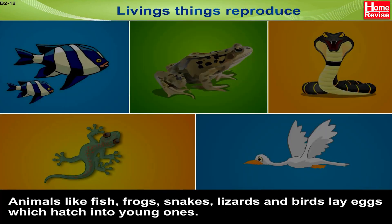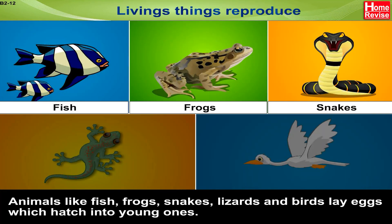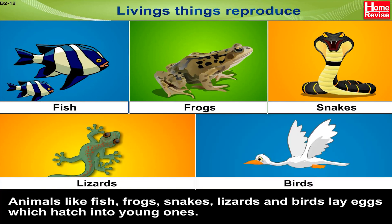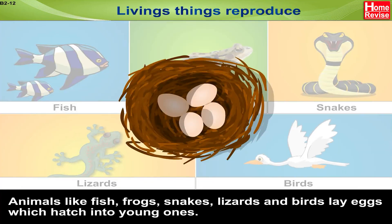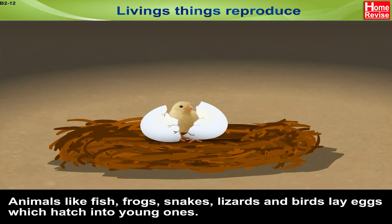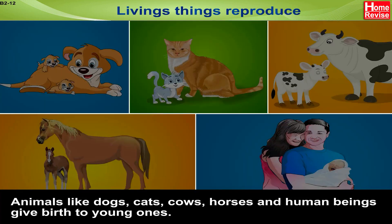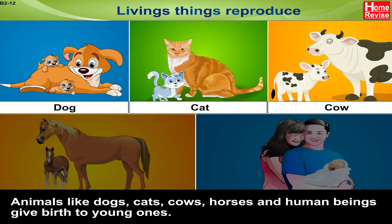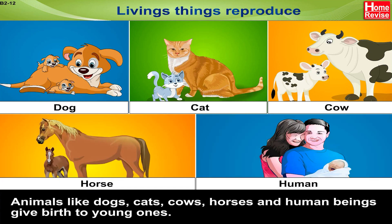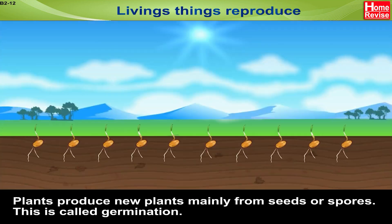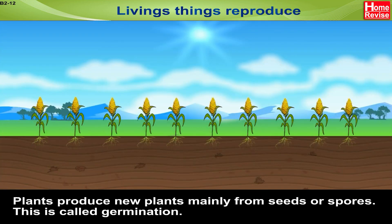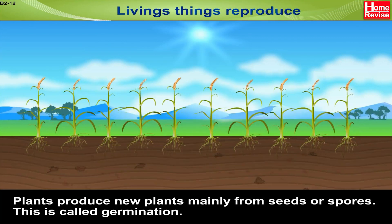Animals like fish, frogs, snakes, lizards, and birds lay eggs which hatch into young ones. Animals like dogs, cats, cows, horses, and human beings give birth to young ones. Plants produce new plants mainly from seeds or spores; this is called germination.